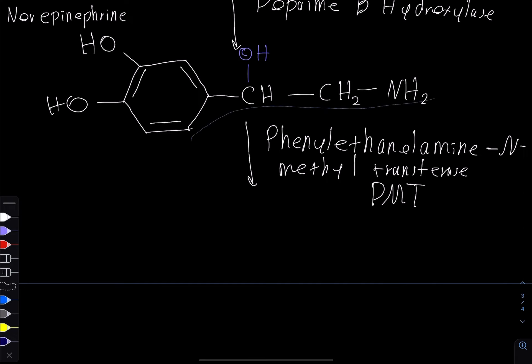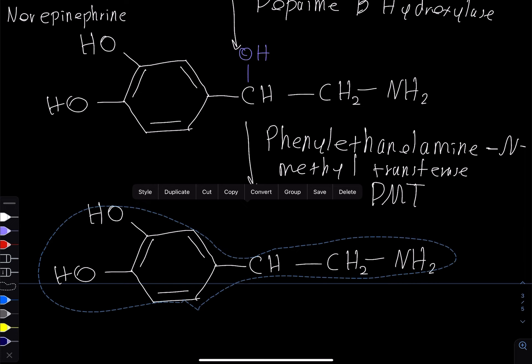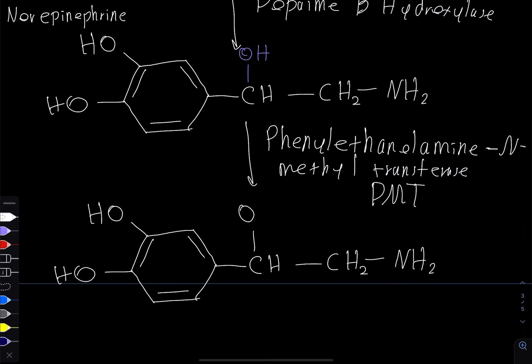This is going to modify this molecule in a very particular way. The hydroxyl was here from before, but it's going to take away a hydrogen—before you had two hydrogens, but it's going to take one of them away. So now we have one hydrogen, but we have a methyl group at this end. This molecule is called epinephrine, also known as adrenaline.